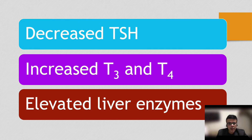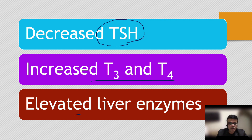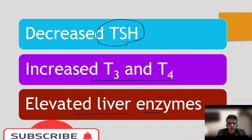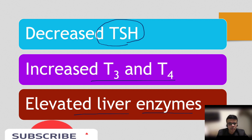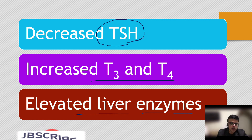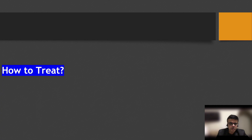Lab abnormalities include decreased TSH — thyroid stimulating hormone — level, and increased T3 and T4. The increased T3 and T4 leads to the decreased TSH. In many cases, due to the increased action of thyroid hormones, elevated liver enzymes can also be seen in some patients.